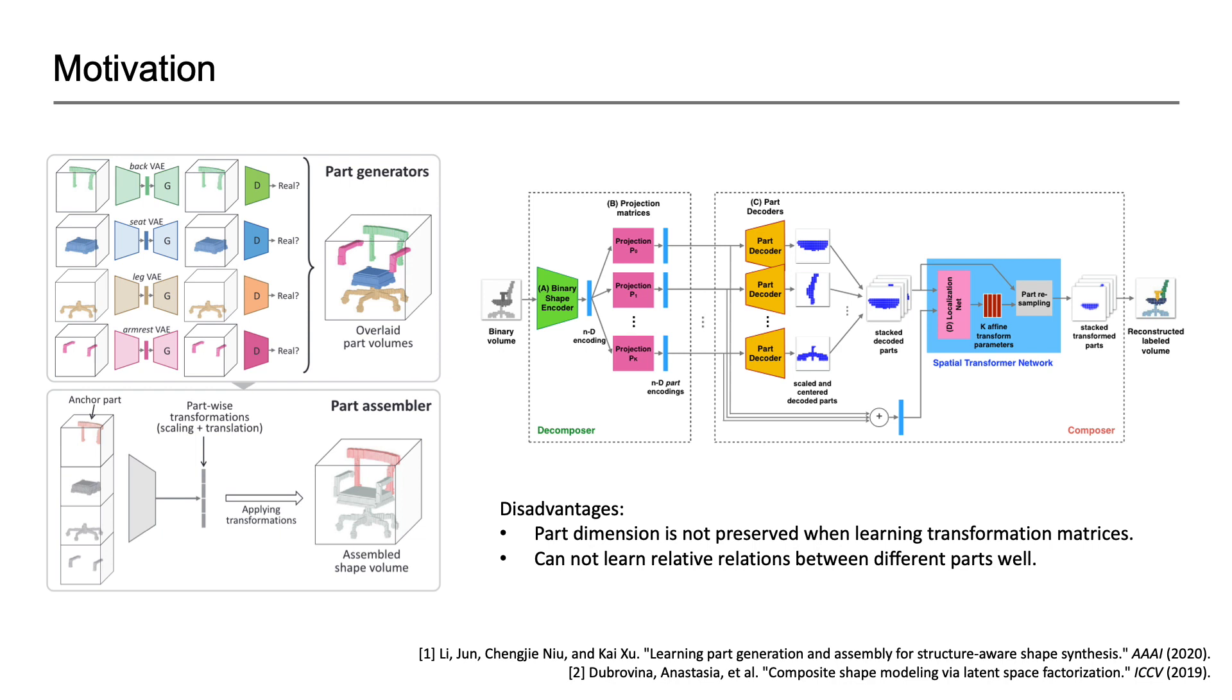For 3D volumetric shape modeling, most previous work is structure-oblivious. Among the structure-aware methods, they mostly fail to preserve part dimensions while learning transformation matrices, limiting the ability to effectively capture relative relationships between parts.